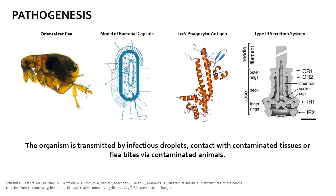The organism is transmitted by infectious droplets, contact with contaminated tissues, or flea bites via contaminated animals. The most common route of transmission in past pandemics were flea bites. The organism infects a flea, forming a biofilm inside the foregut that appears as a black mass. When the flea feeds on a host, the biofilm and the organism are regurgitated into the wound, spreading the infection. Other mechanisms of transmission include contact with infected tissues or aerosols.